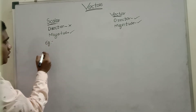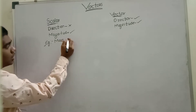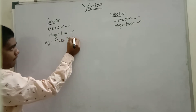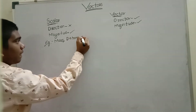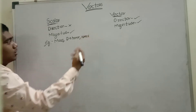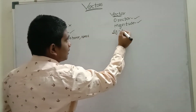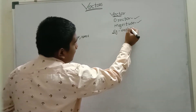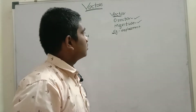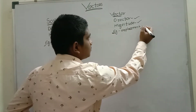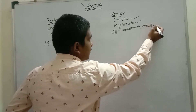For example, scalar quantities include Mass, Distance, and Speed. Whereas vector quantities include Displacement and Velocity.